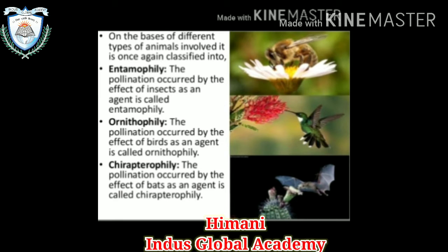On the basis of the different types of animals involved in pollination, these are classified into different types. Entomophily — the pollination that occurs by the effect of insects as an agent. Ornithophily — the pollination that occurs by the effect of birds as an agent, it's called ornithophily. Chiropterophily — the pollination that occurs by the effect of bats as an agent is known as chiropterophily.